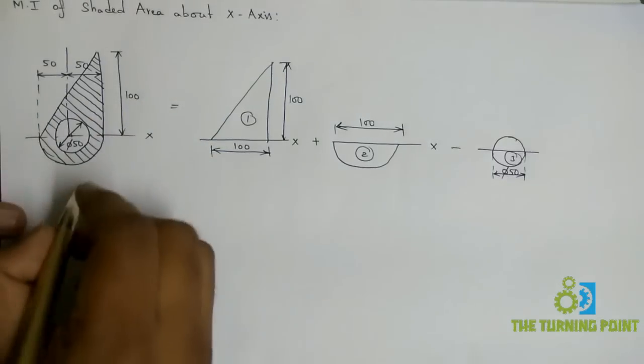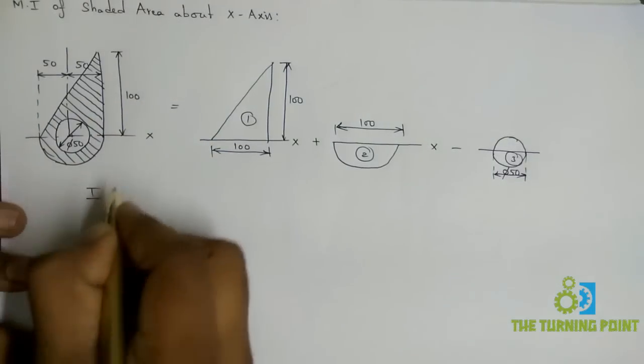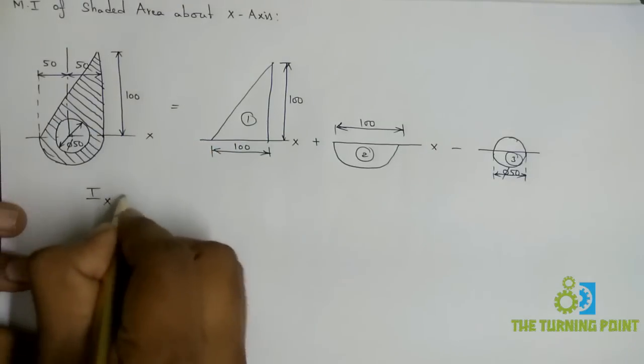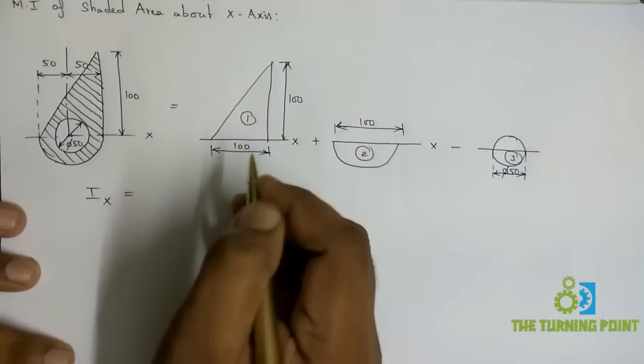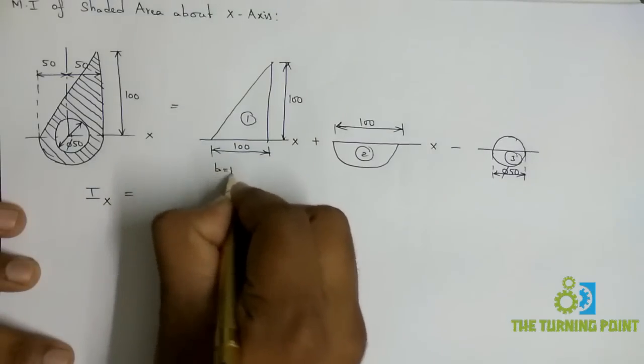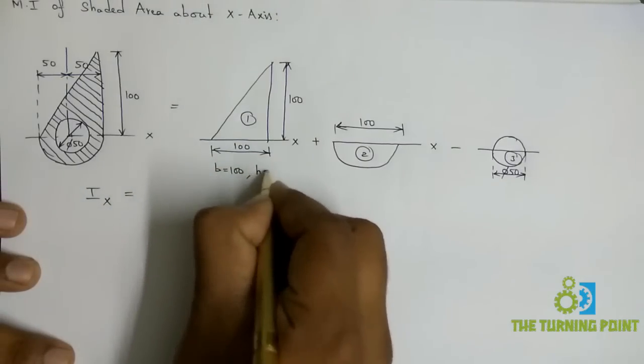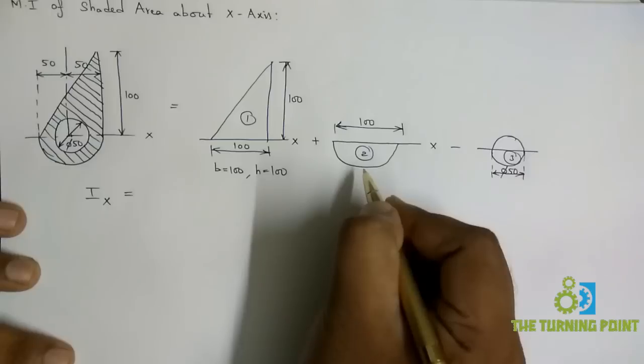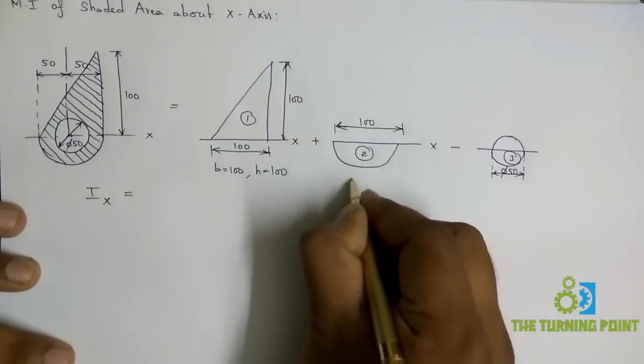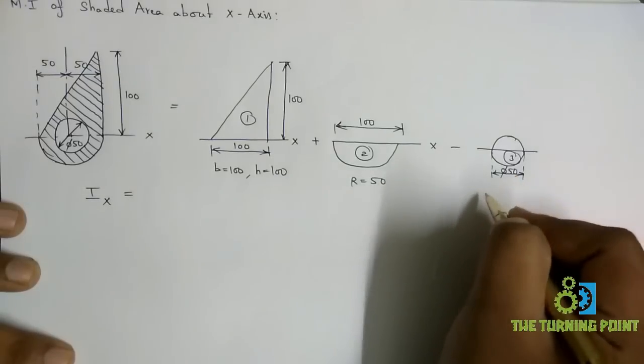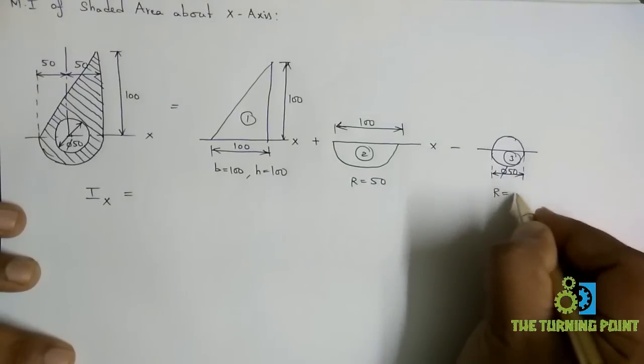Let us find the moment of inertia of this shaded area about the x-axis. For the right-angle triangle, base is 100, height is 100. For the semi-circle the radius is 50, and for the complete circle the radius is 25.